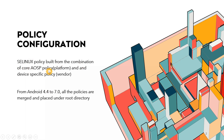SELinux policy is built from the combination of core AOSP policies — that is the platform — and the device-specific policy, that is the vendor partition. We all know that there will be a vendor partition and a system partition in our devices. Device manufacturers put their customization code — relating to the UI and new features they introduce in their phones — in the vendor partition.